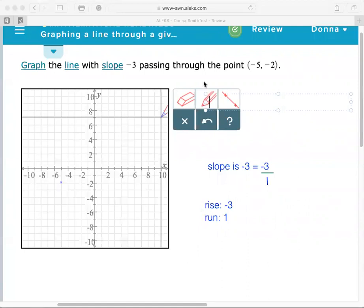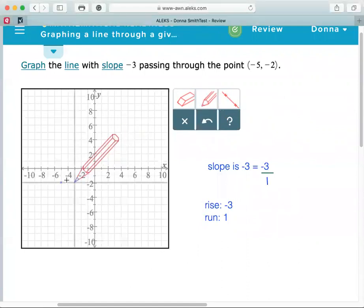I'm going to go to our ordered pair using the pen tool. I'm going to rise negative 3, which means to go down 3: 1, 2, 3. Don't place a point there. That's just giving you directions to move up or down. That's your rise. The rise is up and down like an elevator.